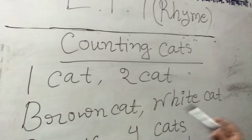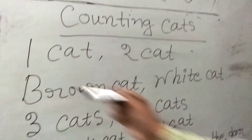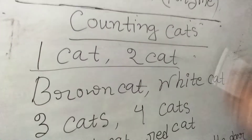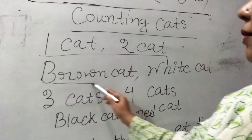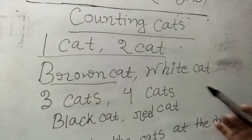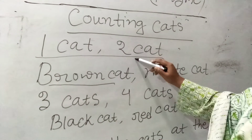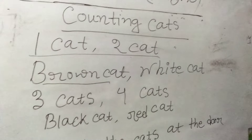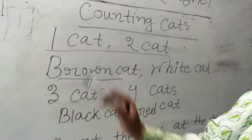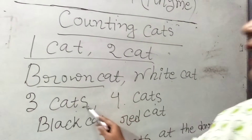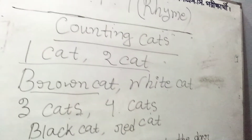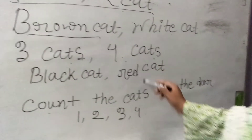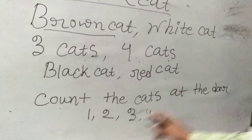One cat, two cats — brown kids, white kids. Chronologically, the cats are standing in a line. The very first one is brown in color, and the second one is white. Then three kids, four kids — black cat, red cat. The third in order is black, and the fourth in chronological order is red.